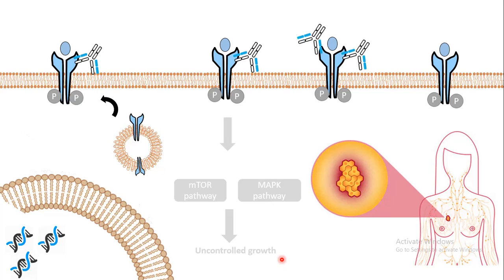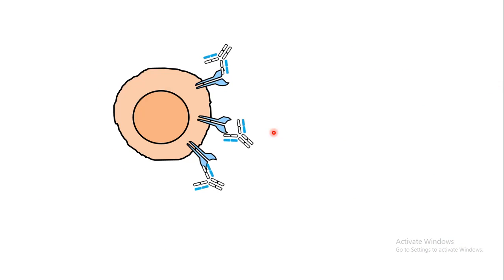The treatment for this is Herceptin, which is an antibody that binds to HER2 receptors. Herceptin binds to the HER2 receptors and interferes with the signaling processes, so the signaling becomes weakened and the output of the signal is reduced, thereby inhibiting uncontrolled growth. Not only does it interfere with signaling, it does another important thing. Many cells in the immune system have an Fc receptor targeted against the Fc region of this antibody — one such cell is the natural killer cell, which are powerful killers in the immune system.